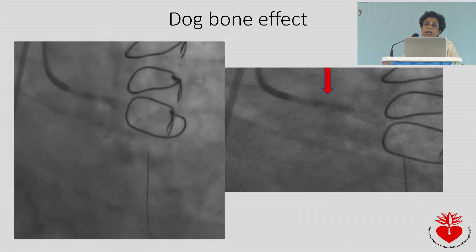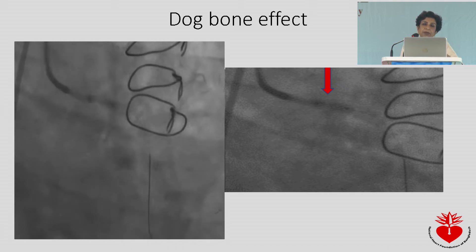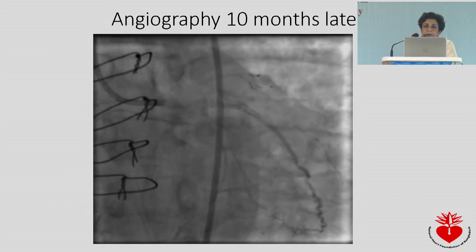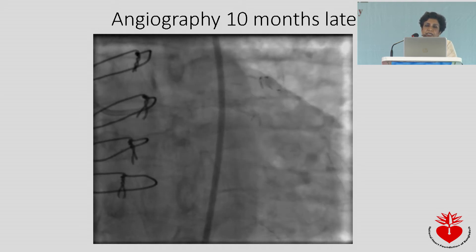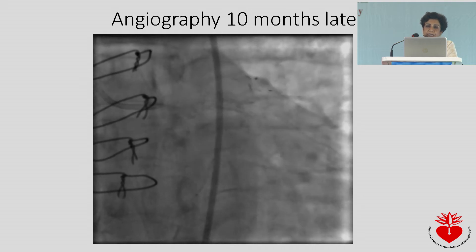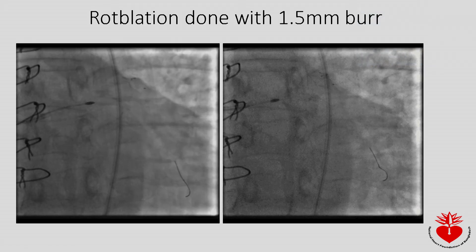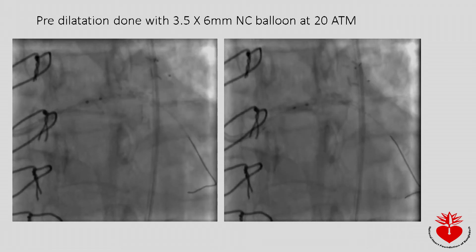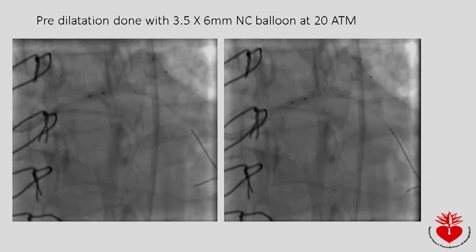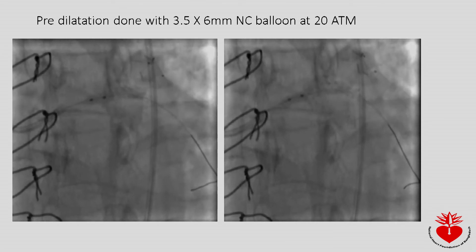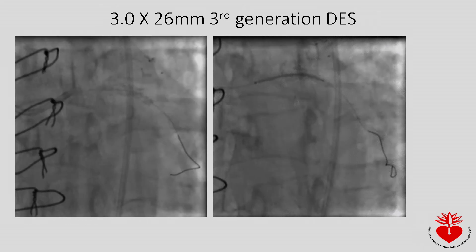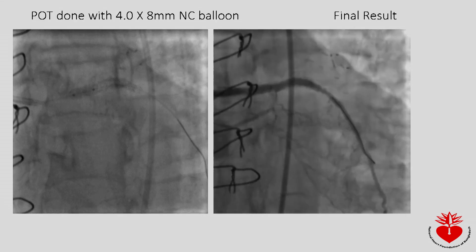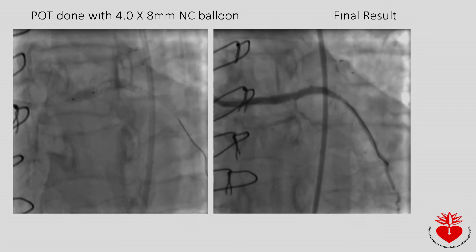The SVG to LAD was still functioning well even 20 years after surgery. When we reviewed the prior attempt, there was a clear dog-boning effect — they had been unable to open the vessel. On our angiogram, we could clearly appreciate the calcification and ISR within the first-generation Cypher stent. We performed rotablation with a 1.5 mm burr. After rotablation, we pre-dilated with a 3.5 by 6 mm NC balloon at very high pressure, then deployed a 3 by 26 mm third-generation drug-eluting stent, performed post-dilatation, and completed proximal optimization with a 4 by 8 mm NC balloon, achieving an excellent final result.